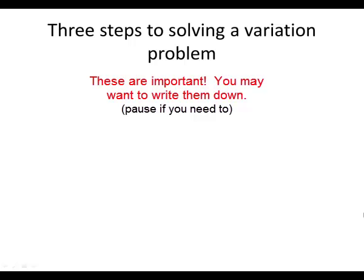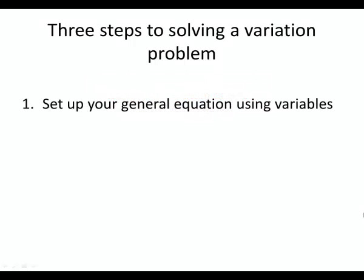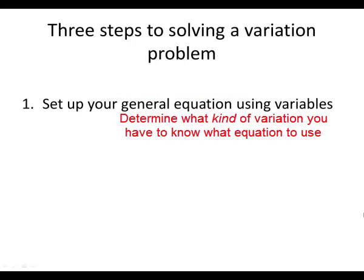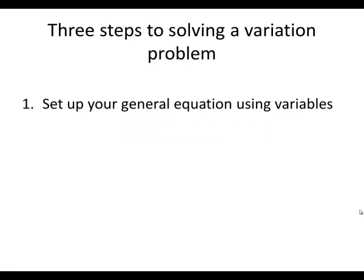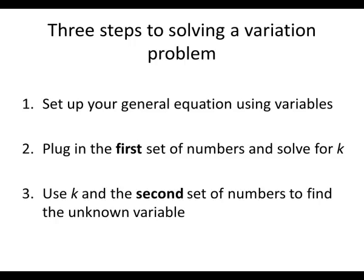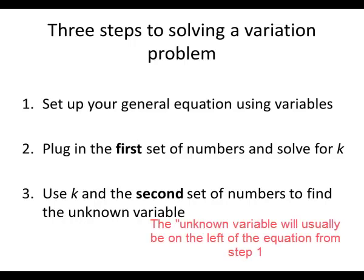The three steps to solving all of these variation problems that you'll see are as follows. First, you'll set up your general equation using the variables, and you'll be able to sometimes make up your own variables. Sometimes the variables will be given to you. But then what you're going to do is plug in a first given set of numbers, and you'll solve that to find your k. And remember, k is constant. And then step three is you will use that k that you found from step two and a second set of numbers that they'll always give you to find the unknown variable. So let's see how that works.